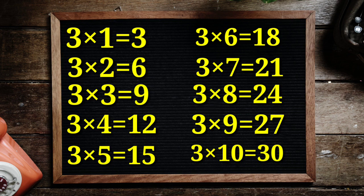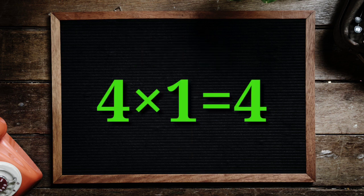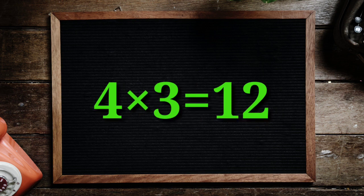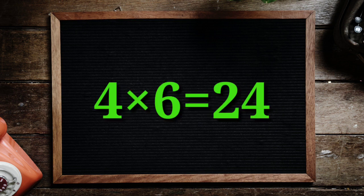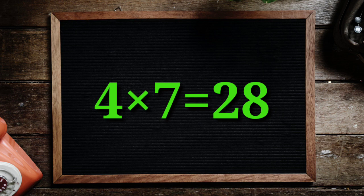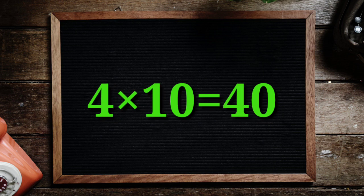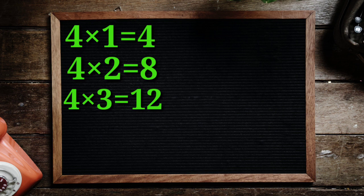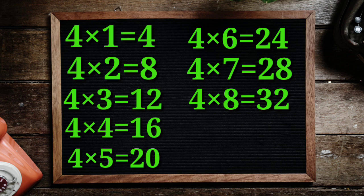Table of 4: 4 1's are 4, 4 2's are 8, 4 3's are 12, 4 4's are 16, 4 5's are 20, 4 6's are 24, 4 7's are 28, 4 8's are 32, 4 9's are 36, 4 10's are 40.